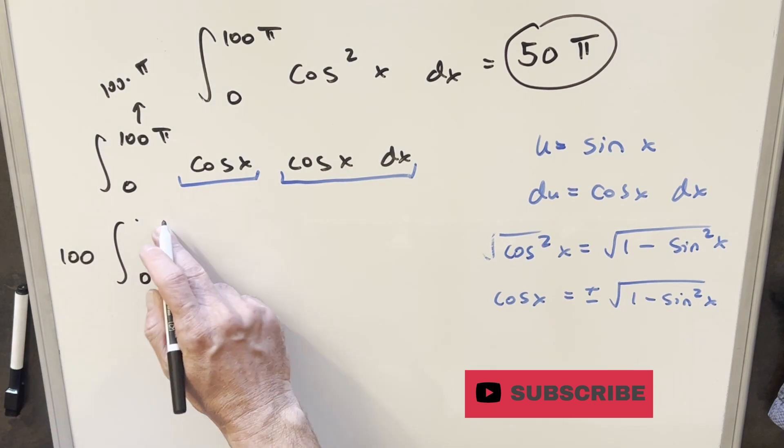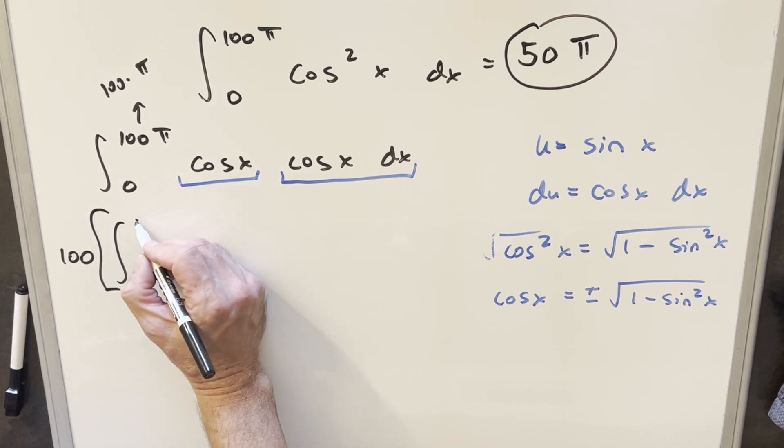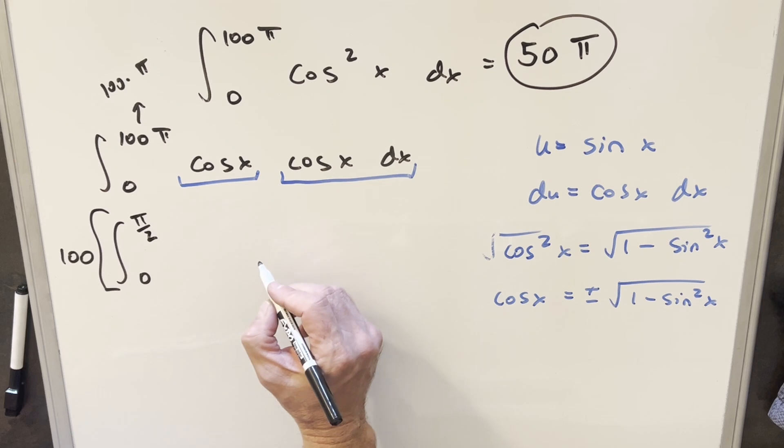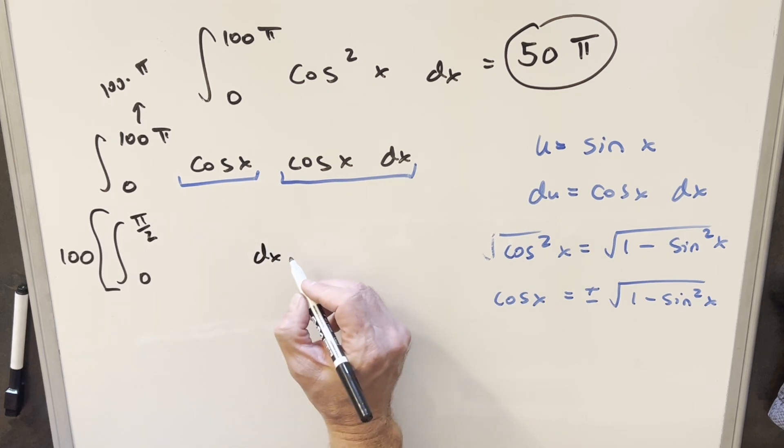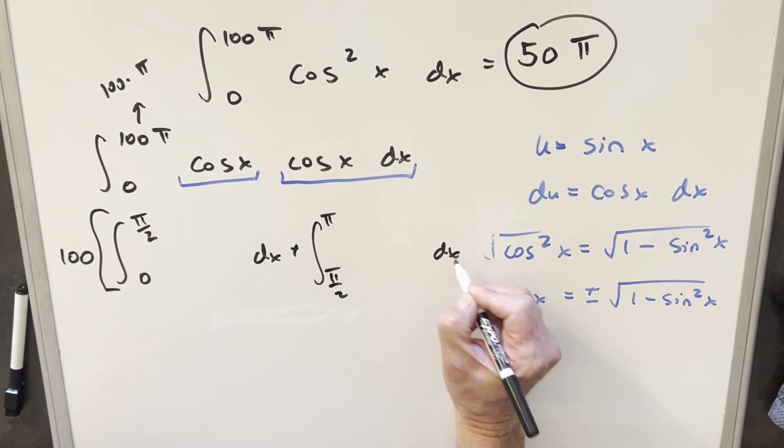But what I want to do is I want to break that up for positive and negative cosine values. So what we can do is we can say from 0 to π over 2, all of our cosine values are positive. And then for the rest of the integral, we're going from π over 2 to π. And then that's going to be second quadrant. Cosine is always negative. So we know what to do there.